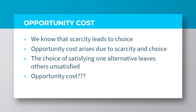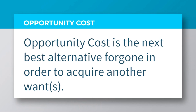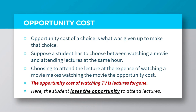One thing that we should also know is that the choice of satisfying one alternative leaves others unsatisfied. So, what is opportunity cost? Opportunity cost is the next best alternative forgone in order to acquire another want. For instance, the amount of money a person spends on a commodity at a given point in time reduces that person's purchasing ability to spend on other commodities. Therefore, opportunity cost of a choice is what was given up to make that choice.